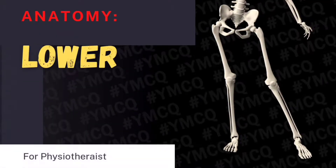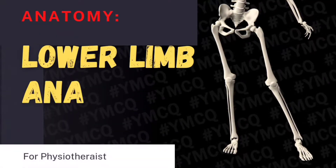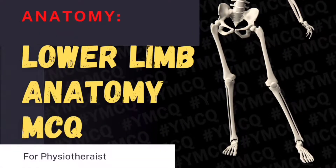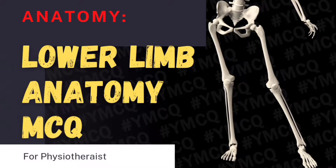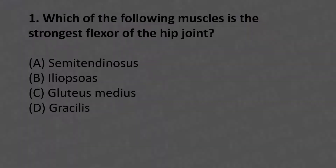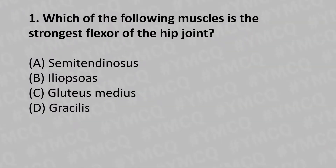Hello, welcome to today's topic: lower limb anatomy MCQ for physiotherapists. Moving to our first question: which of the following muscle is the strongest flexor of the hip joint? Option A: semitendinosus, Option B: iliopsoas, Option C: gluteus medius, Option D: gracilis. And the answer is Option B: iliopsoas.